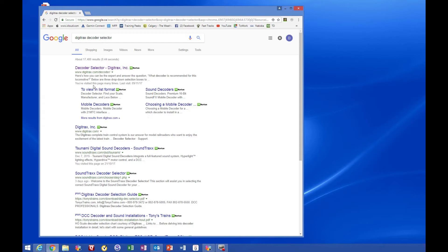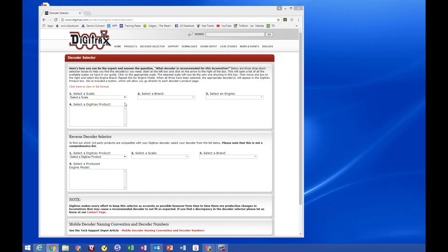I'm going to search for Digitrax decoder selector. Press enter and you'll see I get a bunch of stuff. The first one is Digitrax decoder selector. It comes up like this. I select a scale, HO scale. I select a brand, it's Kato.